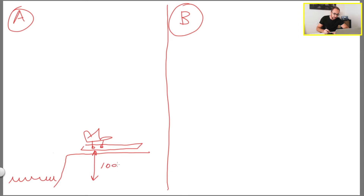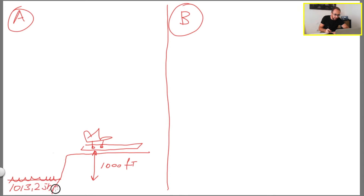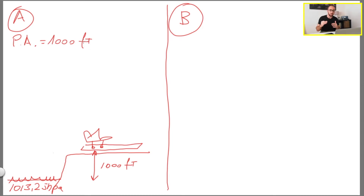In scenario A, if the airport elevation is 1000 feet physical — and that doesn't change — and the pressure at mean sea level is the standard 1013.25 hectopascals, this means the aircraft has a pressure altitude of 1000 feet. Because the pressure altitude is the height above 1013.25 hPa. In a standard atmosphere — and I made a separate video about the standard atmosphere — the QNH is actually 1013.25.